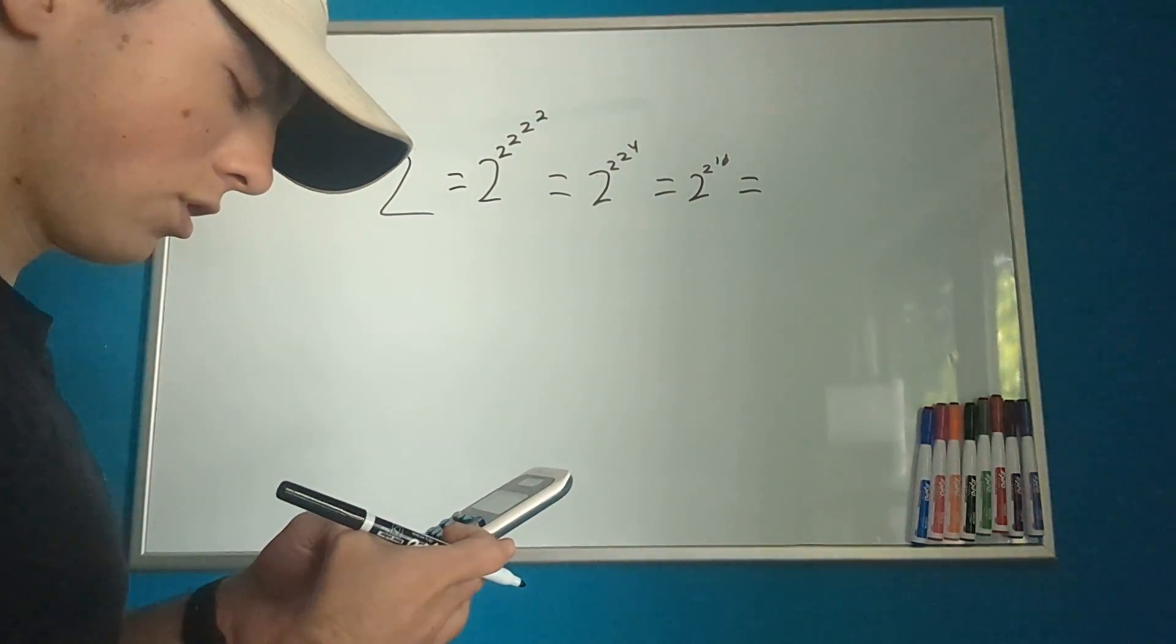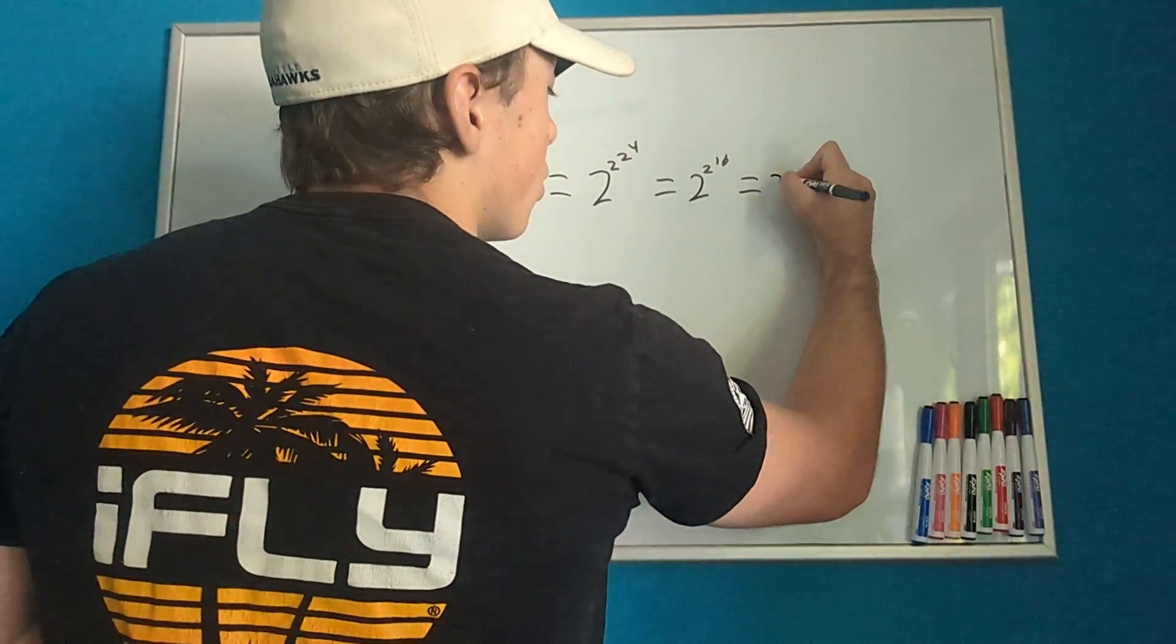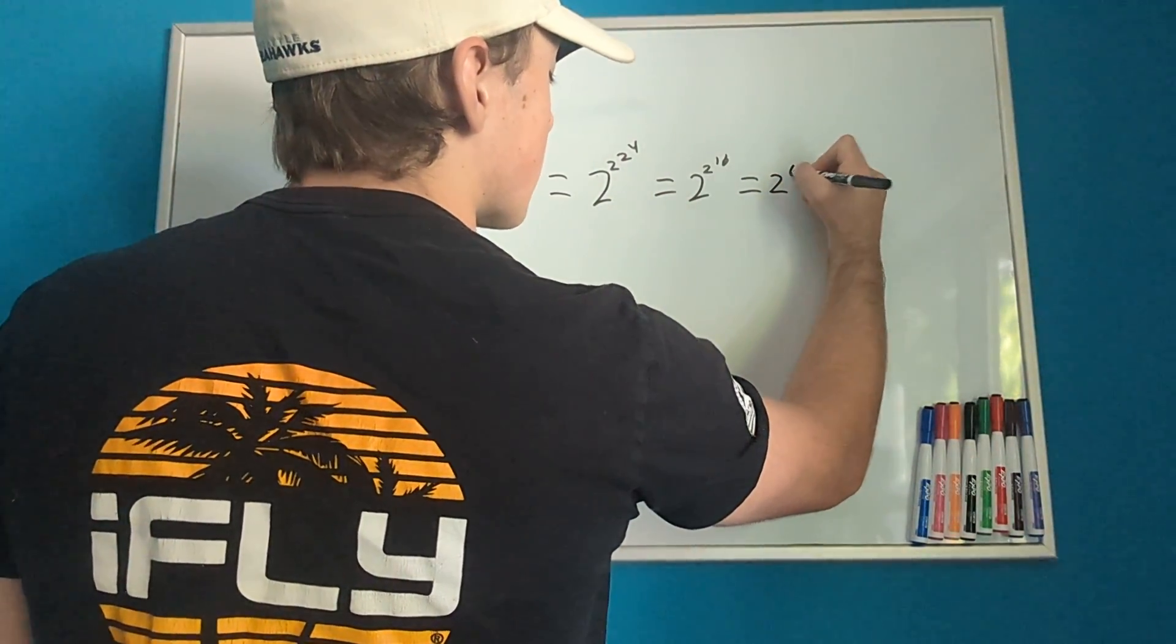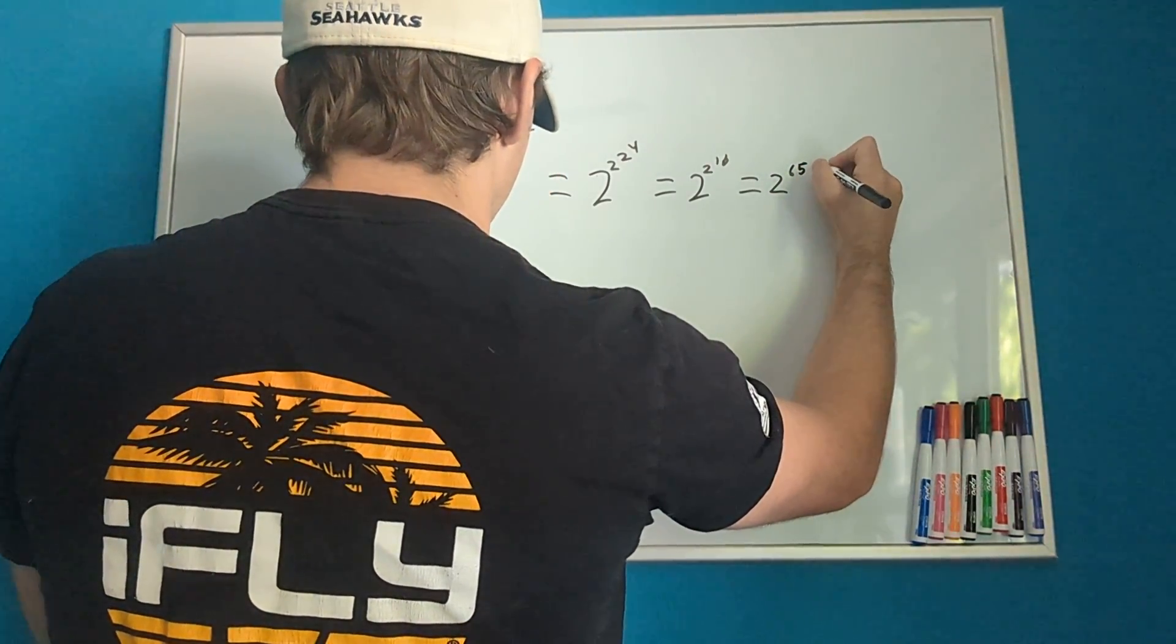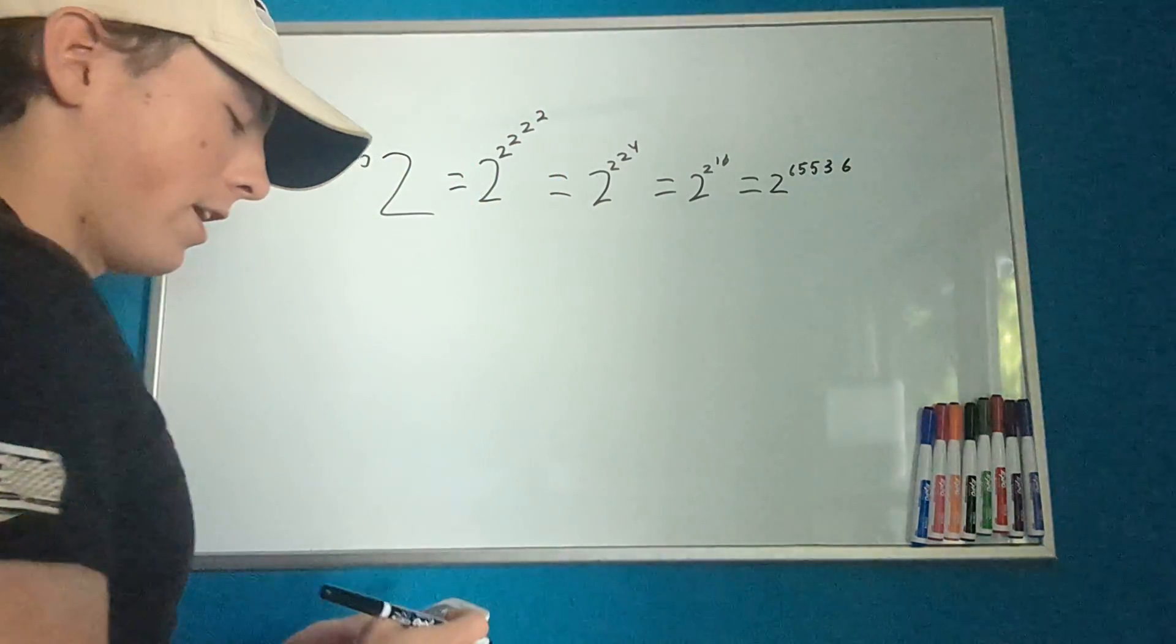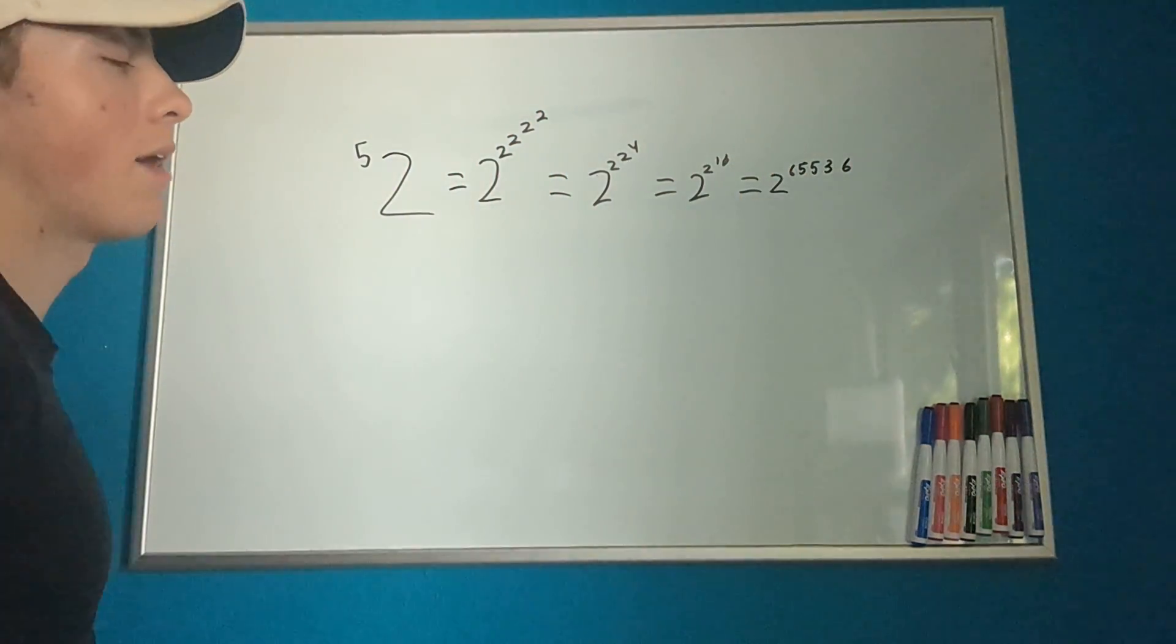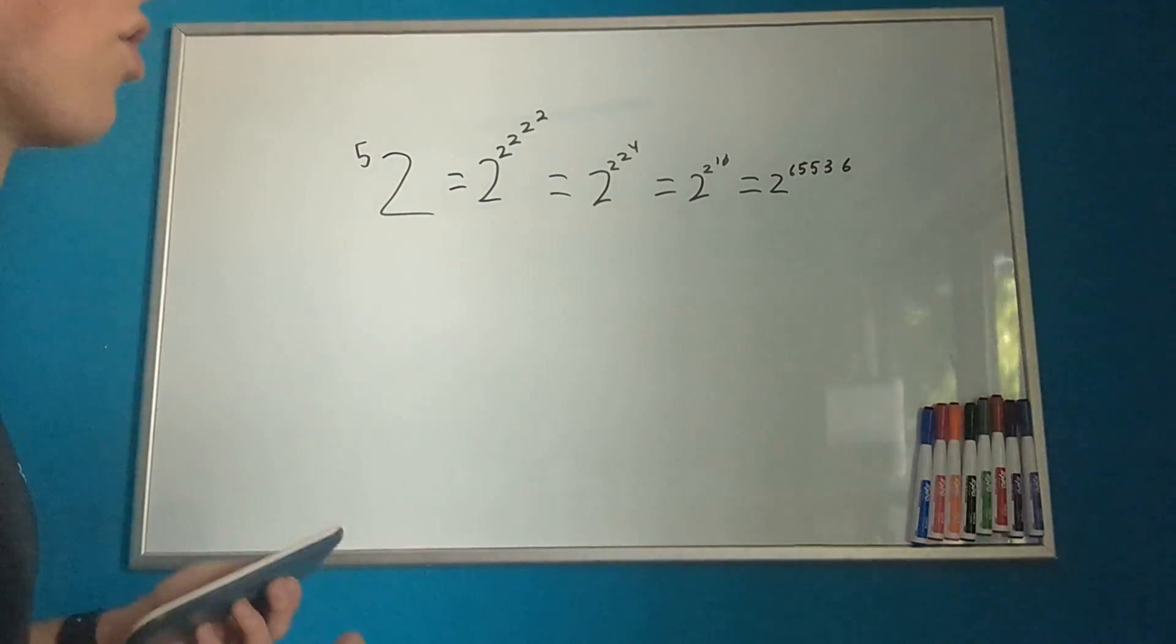Sorry, 2 to the 16 is 2 to the 65,536. And then I'm not even going to plug this into the calculator, but I'm sure you can see that's going to be a very large number.